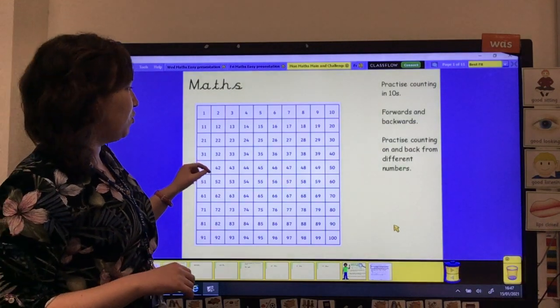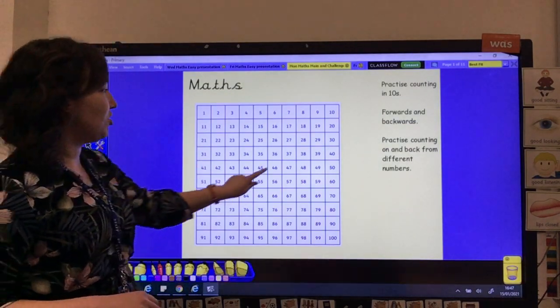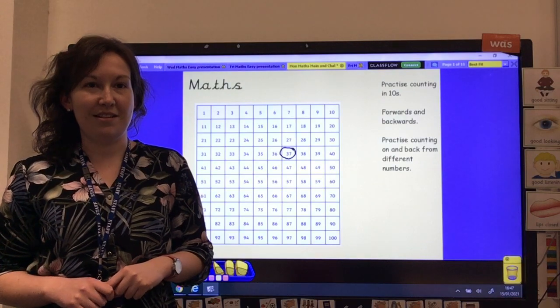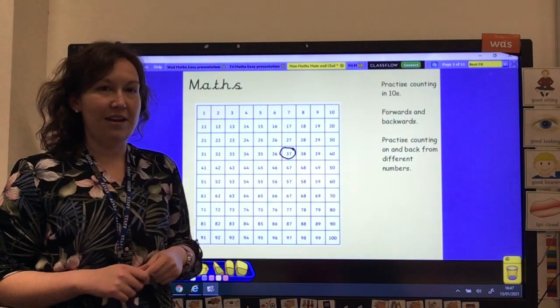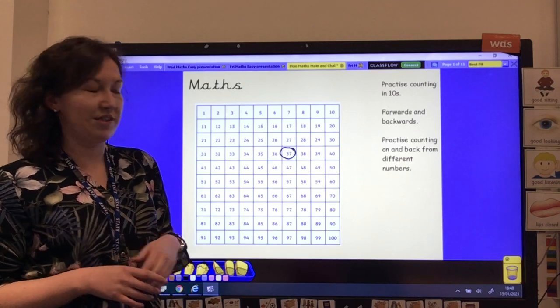Right, this time what if I said start on the number 37 and count on in 10s? Can you remember the pattern where we are jumping on in 10 each time? We'll do this one together and then I'll set a few for you to do yourselves.